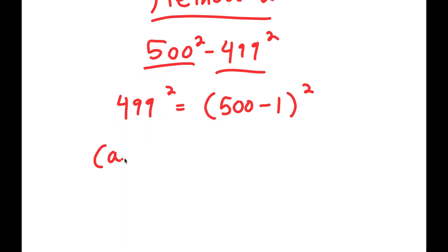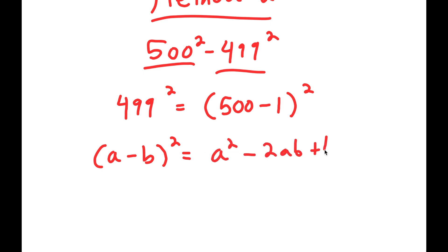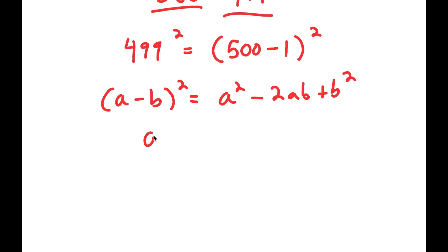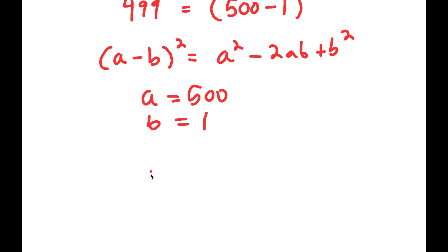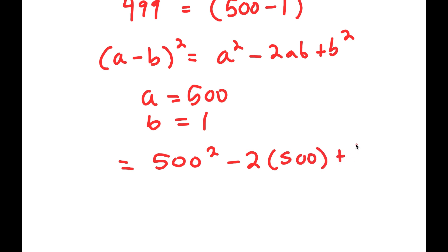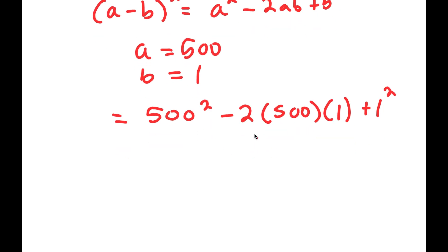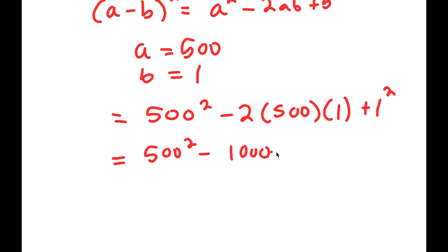If we have something in the form (a minus b) squared, this is equal to a squared minus 2ab plus b squared. Here a is 500 and b is 1, so this turns into 500 squared minus 2 times 500 times 1 plus 1 squared, which simplifies to 500 squared minus 1000 plus 1.